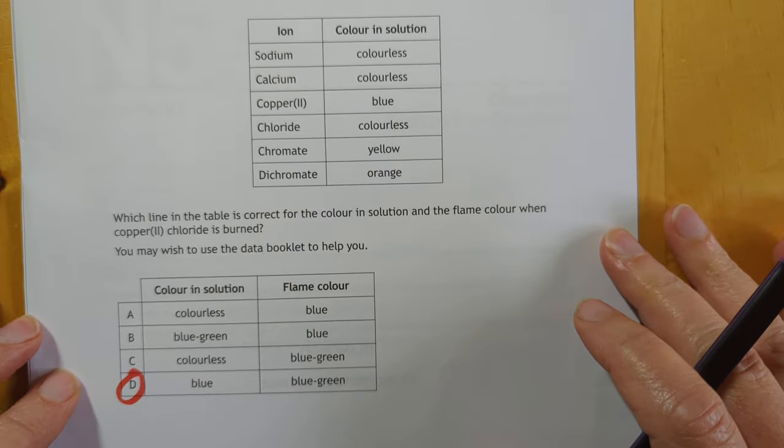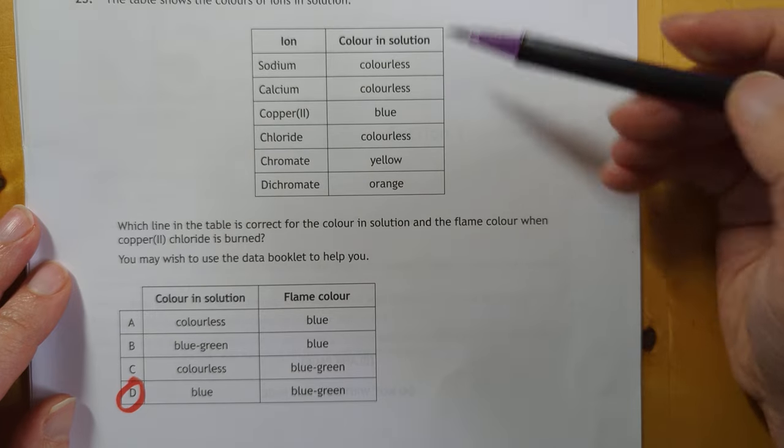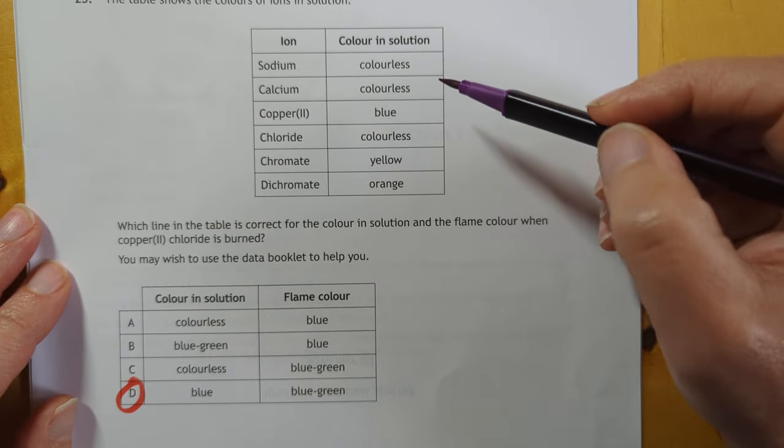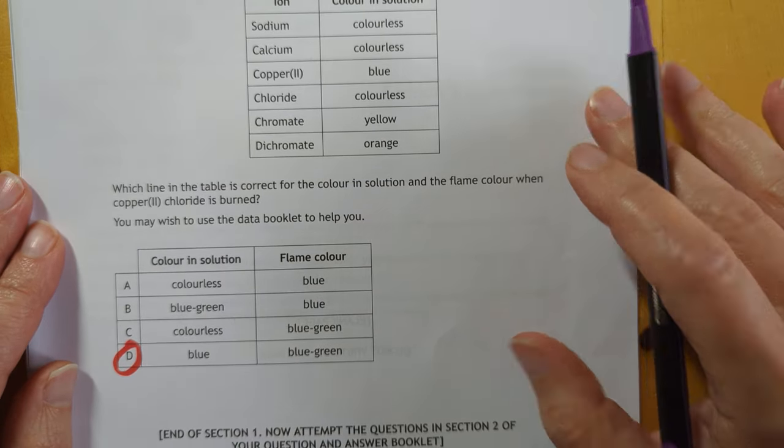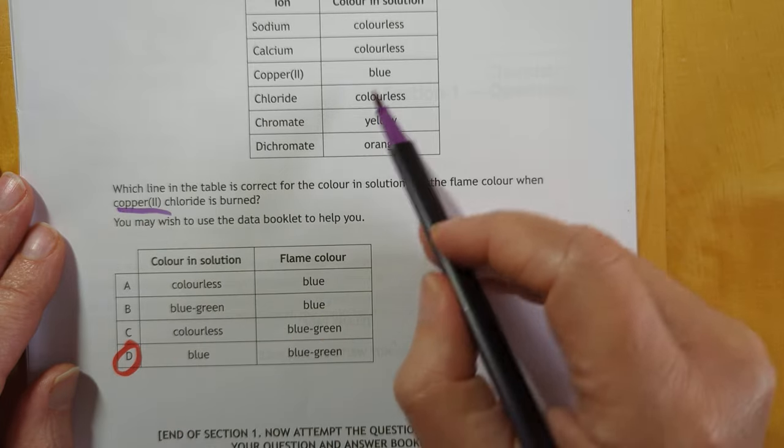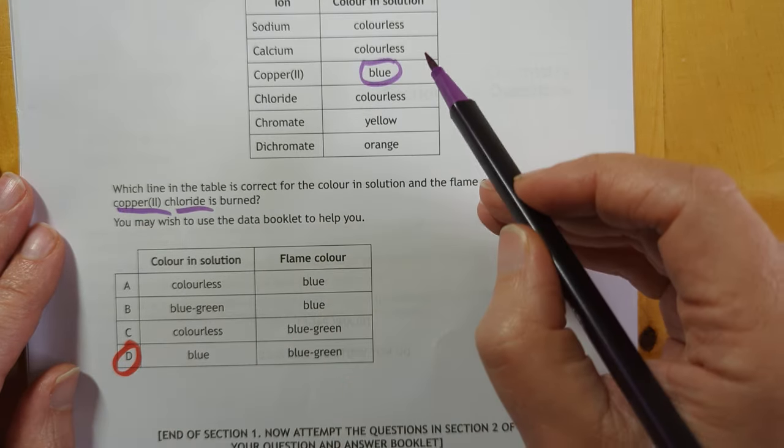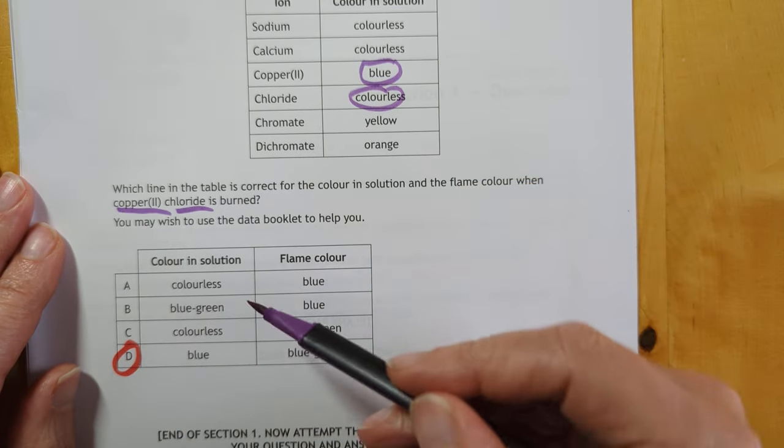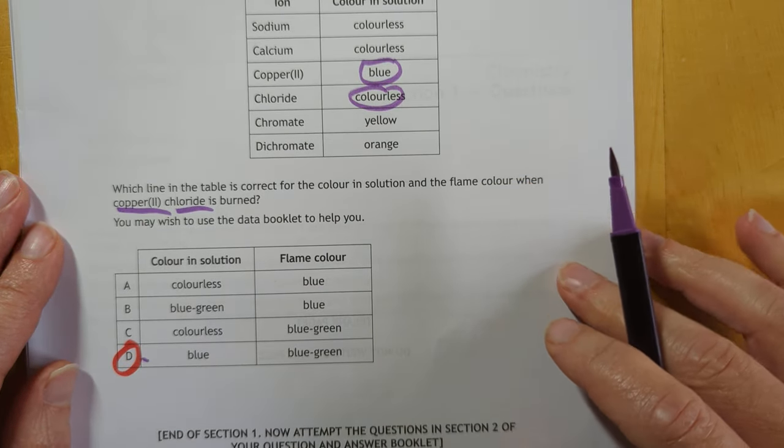One more to go guys. Table shows the colour of ions. This is a problem solving one. Copper 2 chloride. So copper 2 ions are blue, chloride ions are according to this table colourless which means that's your answer right there. Thanks for listening. Bye bye.